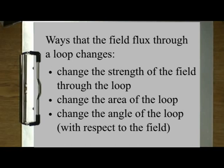Here is a summary of the ways that the magnetic flux through a loop changes: you can change the strength of the field through the loop, like we did by moving the loop closer to the magnet; you can change the area of the loop; or you can change the angle of the loop with respect to the direction of the field.